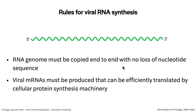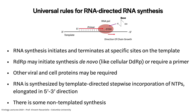I want to talk about RNA synthesis in general — two general rules. First, the RNA genome has to be copied from end to end with no loss of sequence. You can make mRNAs shorter than the genome, but if you want to make more genomes they have to be complete copies. You also have to make mRNAs that can be translated. For some viruses the genome is the same as the mRNA — like poliovirus. But for negative-strand viruses it's not, so mRNAs have to be made.